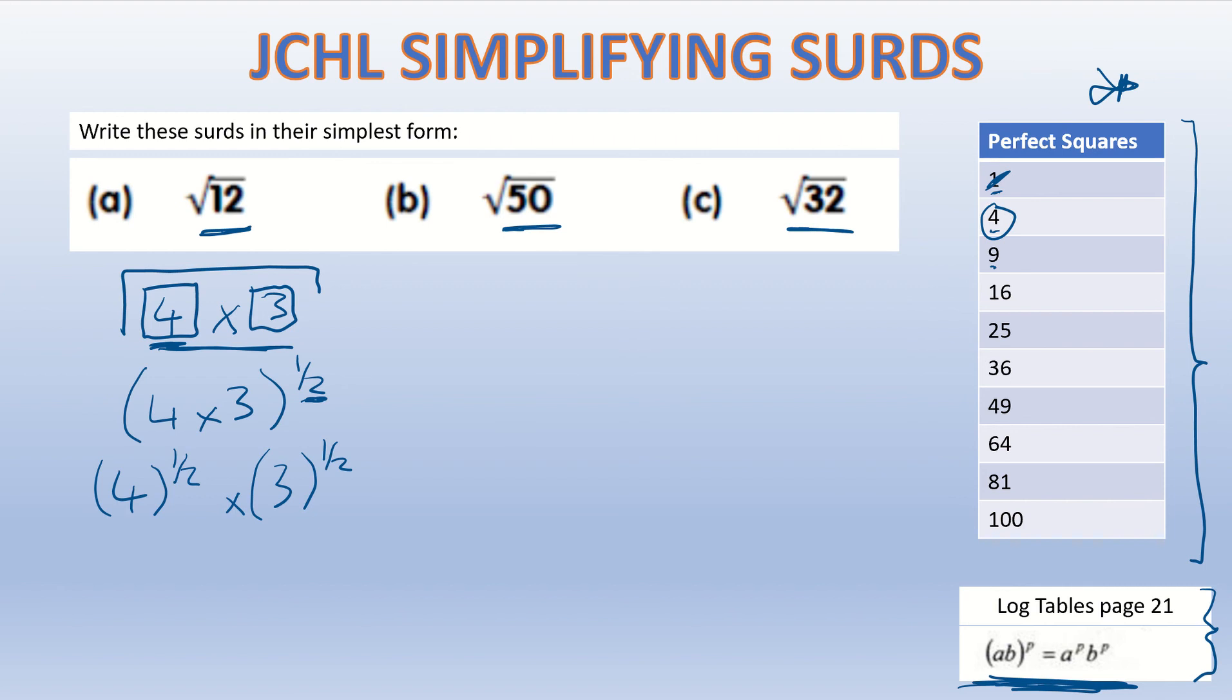Now 4 to the power of a half is the same thing as the square root of 4. We all know that the square root of 4 is 2. That's the same thing as 4, let me just write exactly what I'm doing, times the square root of 3. We all know that the square root of 4 is 2 and root 3 is just root 3.